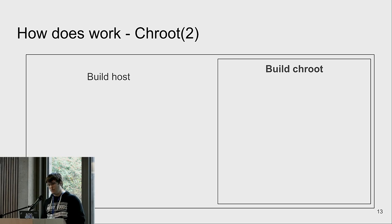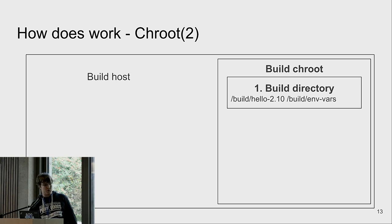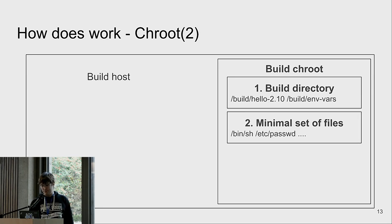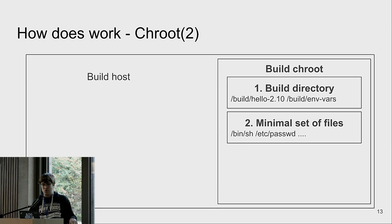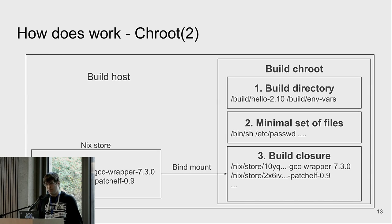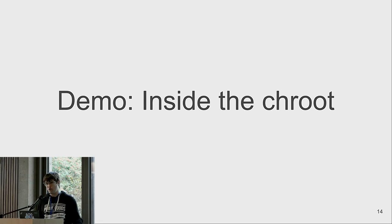Let's go to the first component: the chroot. In the build host, there's this chroot — its own temporary directory that is created — containing the build directory where source code lives, a minimal set of files just enough to build most software but not too many, and the build closure: the dependencies listed in your build, which get bind-mounted from the host system into this chroot.